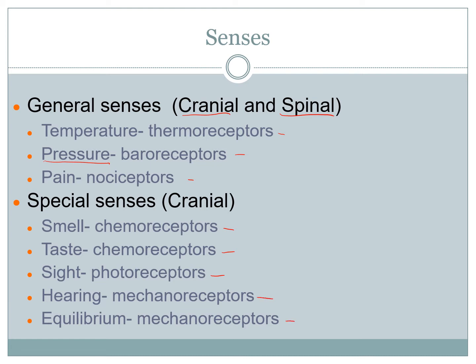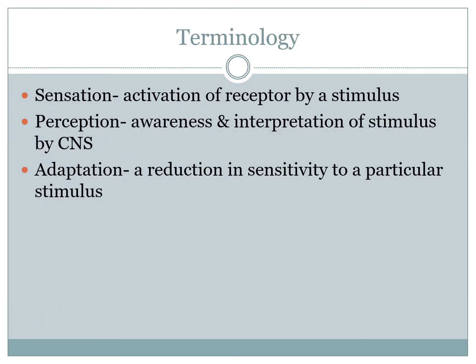Special senses are only controlled by — or only utilize — cranial nerves in order to pass their information on. Now let's talk about a few terminologies used throughout the lesson so you don't get lost.